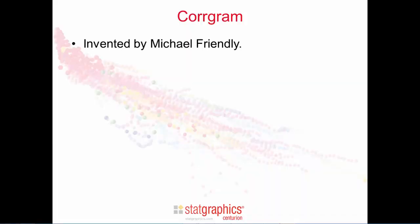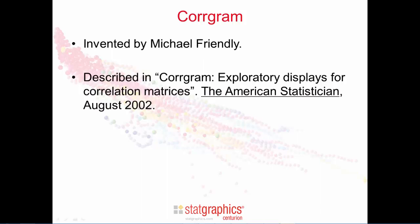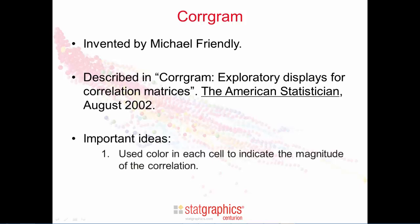The coregram was invented by Michael Friendly as a better method for displaying correlation matrices. The main reference is an article published in the American Statistician called 'Coregram: Exploratory Displays for Correlation Matrices.' That article presented two important ideas. The first was to use color in each cell to indicate the magnitude of the correlation.